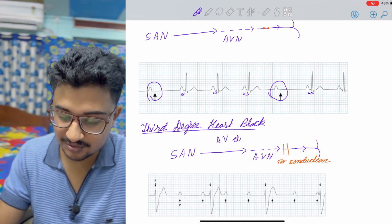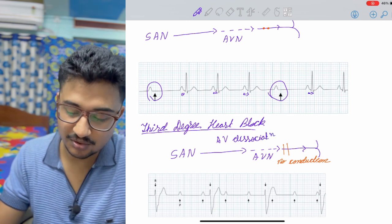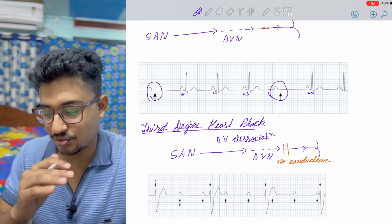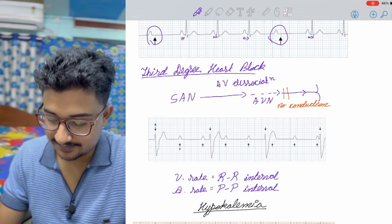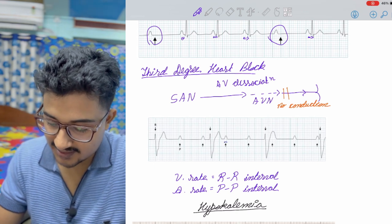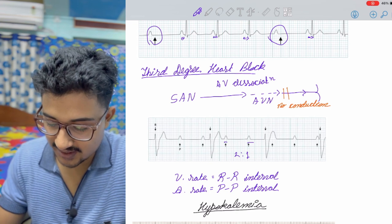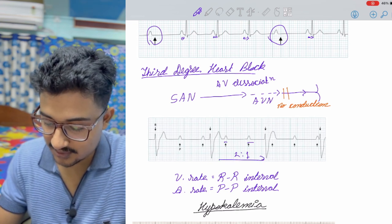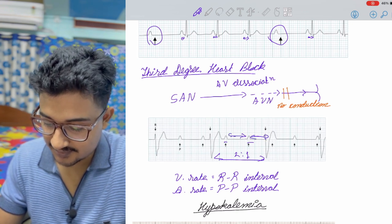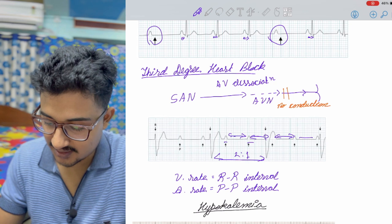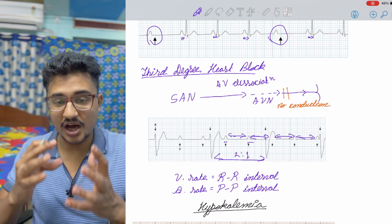Coming to third degree heart block, that is also called AV dissociation, means there is no control of AVN or SA node, any pacemakers to the heart. The RR interval and the PP interval would be variable. This could be, as you can see, this is a 2 is to 1 ratio, though it could be variable also. Ventricular rate you can calculate by the RR interval and the PP interval is the atrial rate. Ventricular rate and atrial rate are different and both are autonomous.